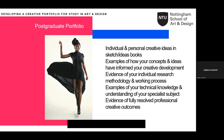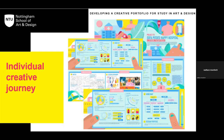We want to see examples of your technical knowledge and understanding of the specialist subject. For postgraduate application, we have to be able to evaluate your ability to move from undergraduate to postgraduate, and that your portfolio is at the right level in terms of your technical and specialist subject understanding. We also want to see evidence of fully resolved professional creative outcomes related to the subject that you want to study — so for postgraduate level, we're looking for a much higher level.